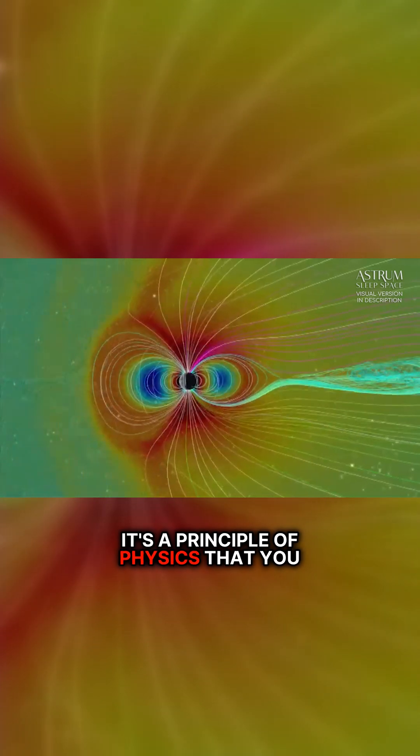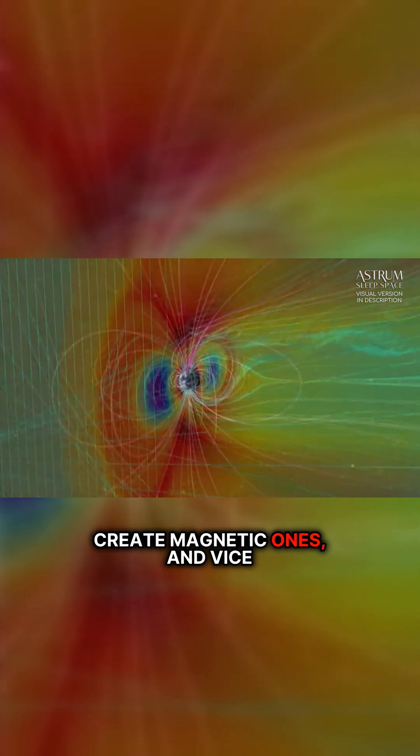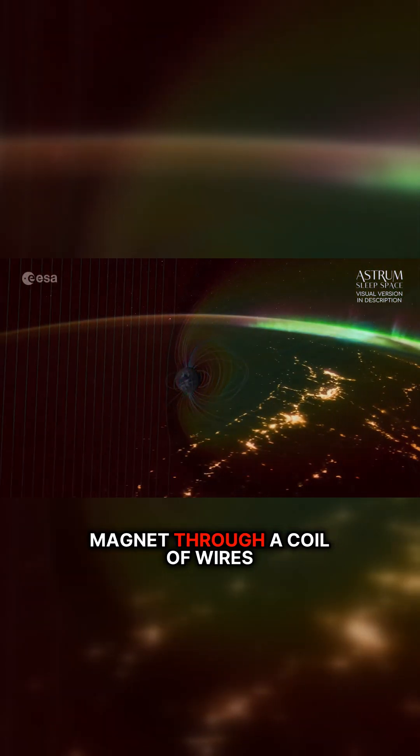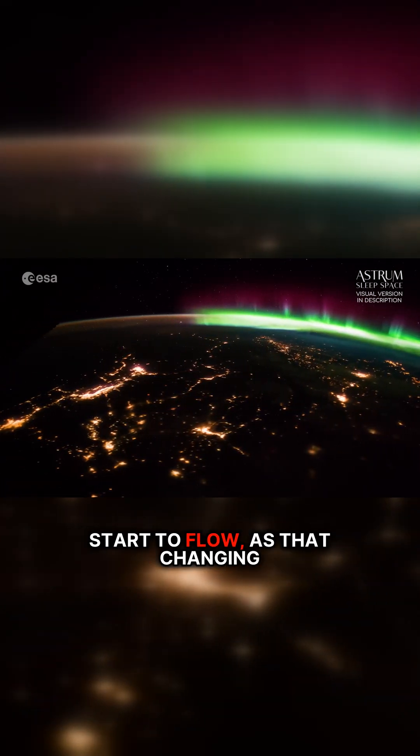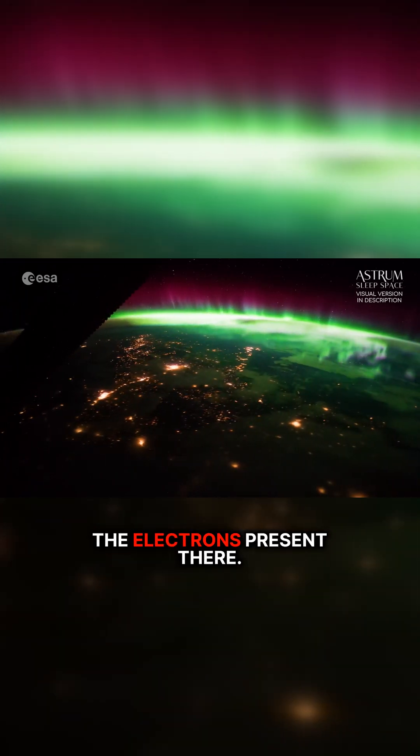It's a principle of physics that you can use electrical fields to create magnetic ones, and vice versa. This is the principle that power plants work under. Moving a magnet through a coil of wires causes electrical current to start to flow, as that changing magnetic field exerts a force on the electrons present there.